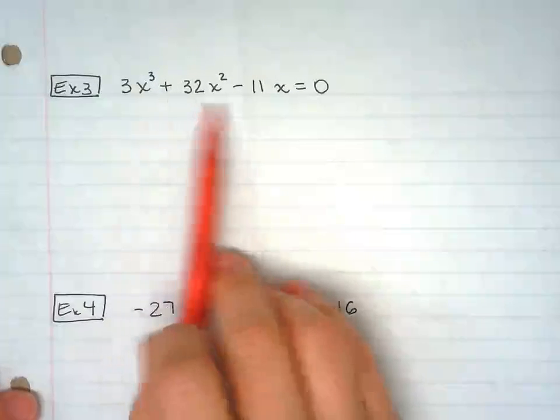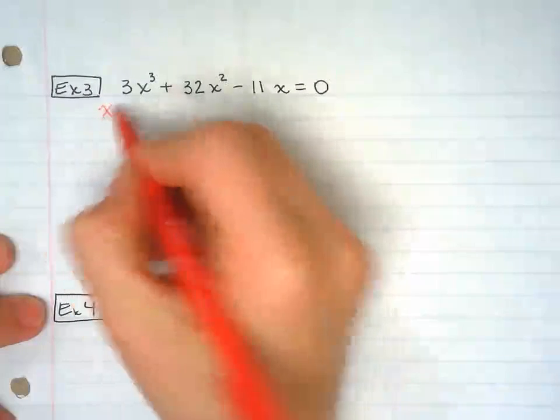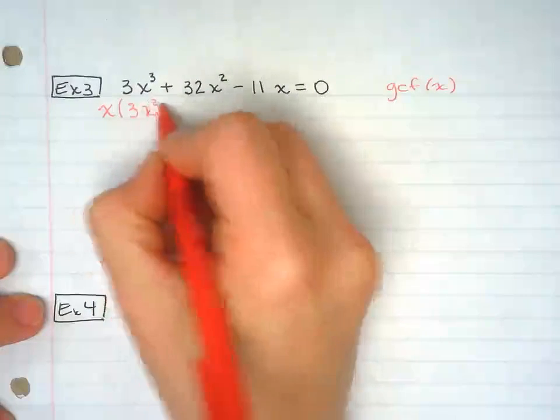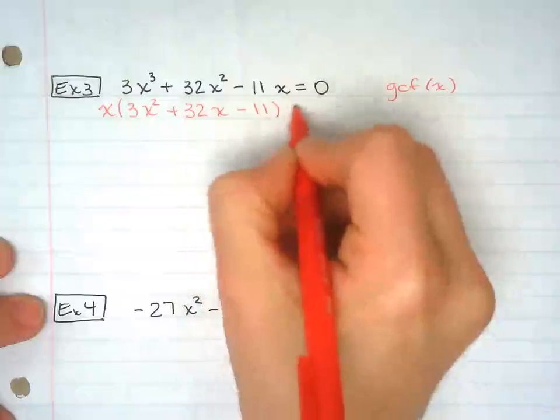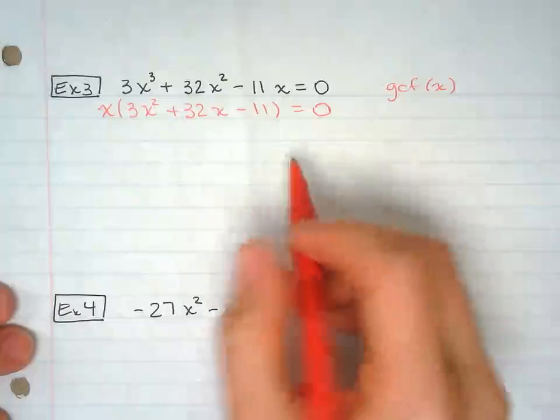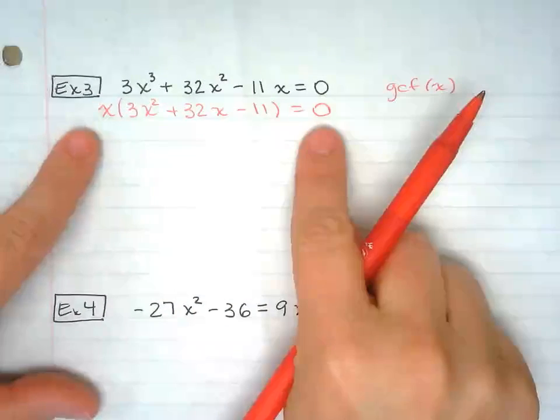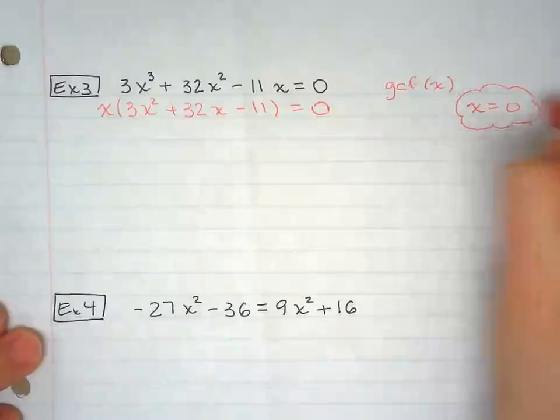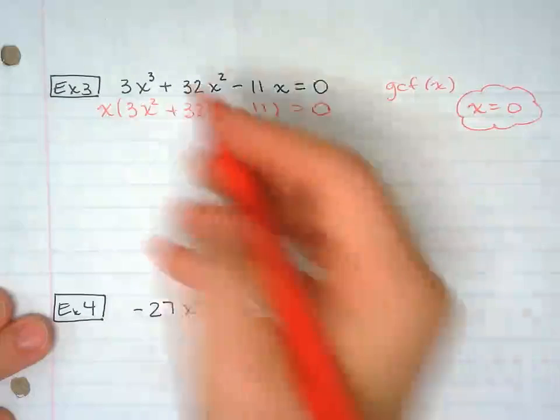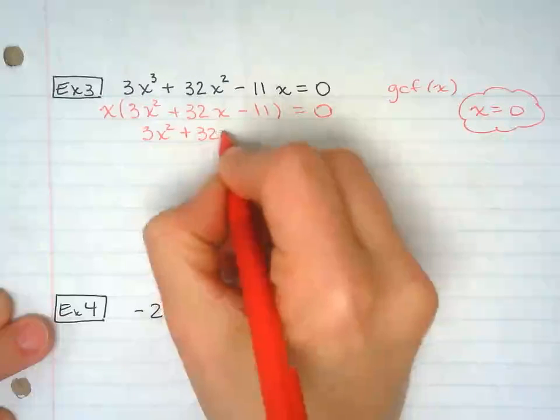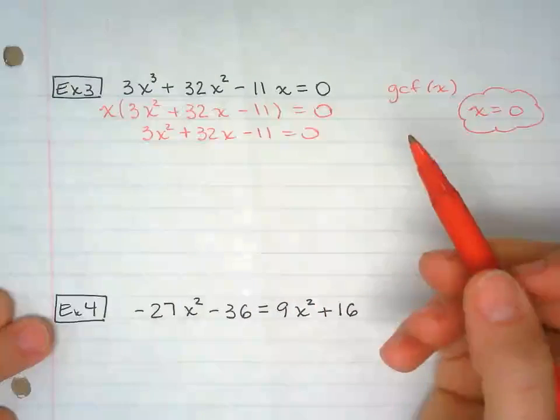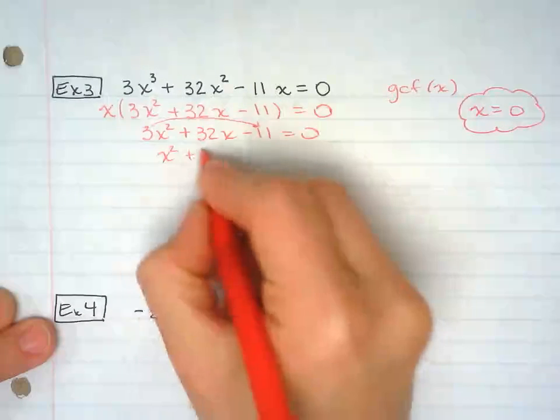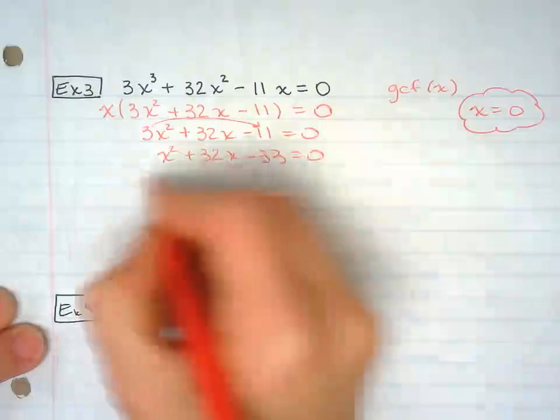So this one, I'm going to start out by factoring x from everybody. So my GCF here is x. That means I'm dividing everybody by x. Now I know that I'm going to have to set my factors equal to 0. This is one of my factors already from the get-go, so I know my answer will be 0 for sure. Now I'm going to set this other one equal to 0 and solve. I could do it by factoring. I'm going to do bottoms up here. We're going to multiply the leading coefficient by the constant.